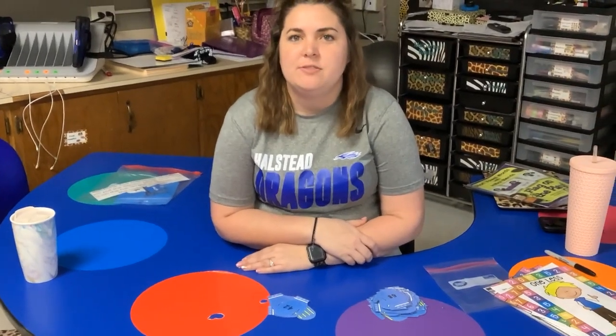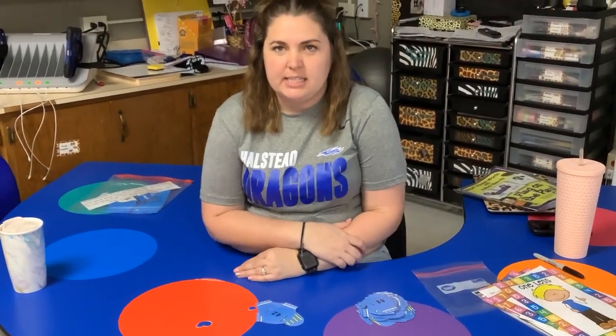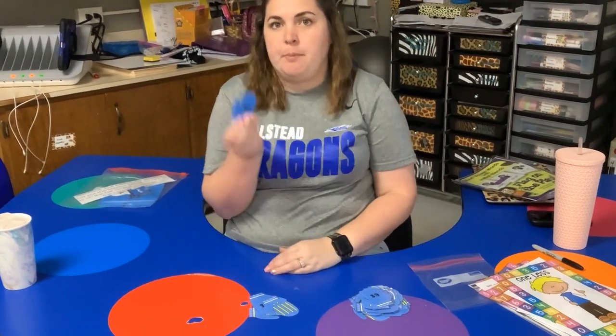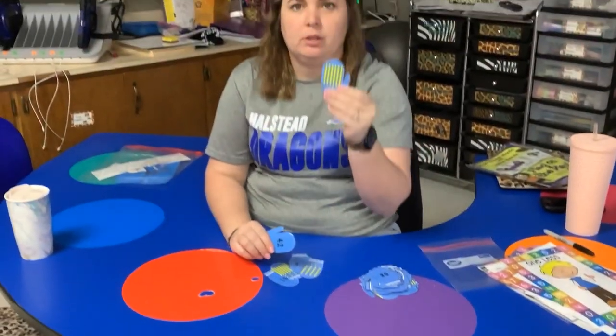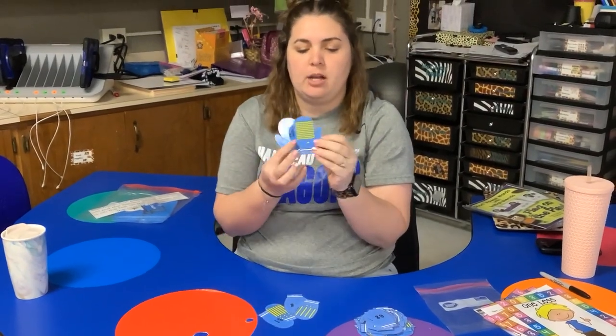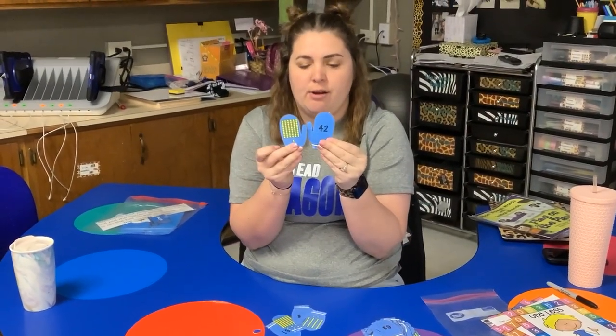All right, this is called place value match the mittens. So you're going to have a number and then you're going to have a mitten with blocks. You have to match the number of blocks to the number. They're a pair. They match.